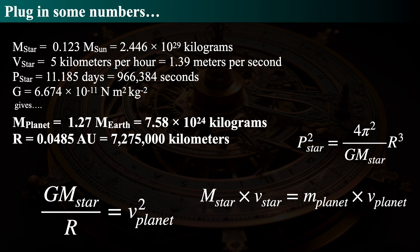The velocity of the star is about 5 kilometers per hour, or about 1.3 meters per second — a very slow reflex motion due to the planet. The orbital period is the easiest to measure: about 11.2 days. Newton's gravitational constant is a universal constant measured by other means. Plugging those four numbers into the three equations gives us a planet mass of about one and a quarter times the mass of the Earth, an orbital distance of about 5% of an astronomical unit — roughly six times closer to its star than Mercury is to the Sun. That's really, really close, which justifies thinking it's tidally locked so that Proxima B always faces one side toward its star.